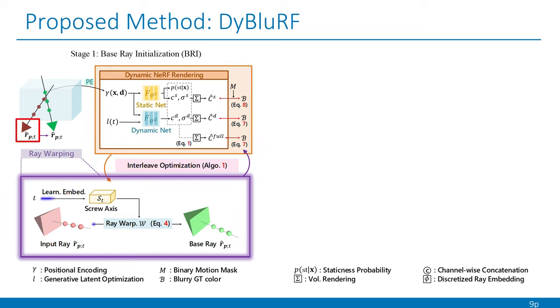For the ray warping, we initialize the base rays to predict better latent sharp rays by warping them from the input rays. To handle the ill-posedness of jointly optimizing dynamic radiance fields and base ray initialization, we propose a novel interleave optimization strategy that alternatively optimizes the ray refinement and static and dynamic nets.